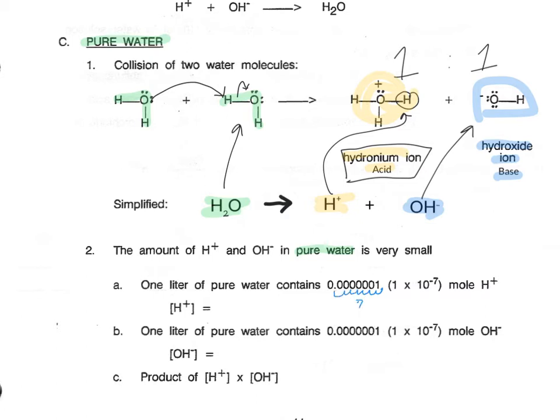It ends up that this is 10 to the negative 7, and so we can write that as 1 times 10 to the negative 7, or just 10 to the negative 7 to keep it simple.